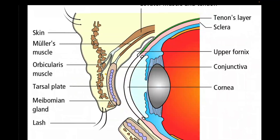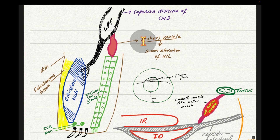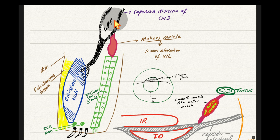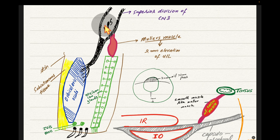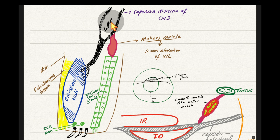The upper lid elevators are the levator palpebrae superioris and the Müller's muscle. The levator palpebrae superioris is supplied by cranial nerve 3. Its tendon attaches to the orbicularis oculi muscle, and this muscle is responsible for the majority of upper lid elevation.